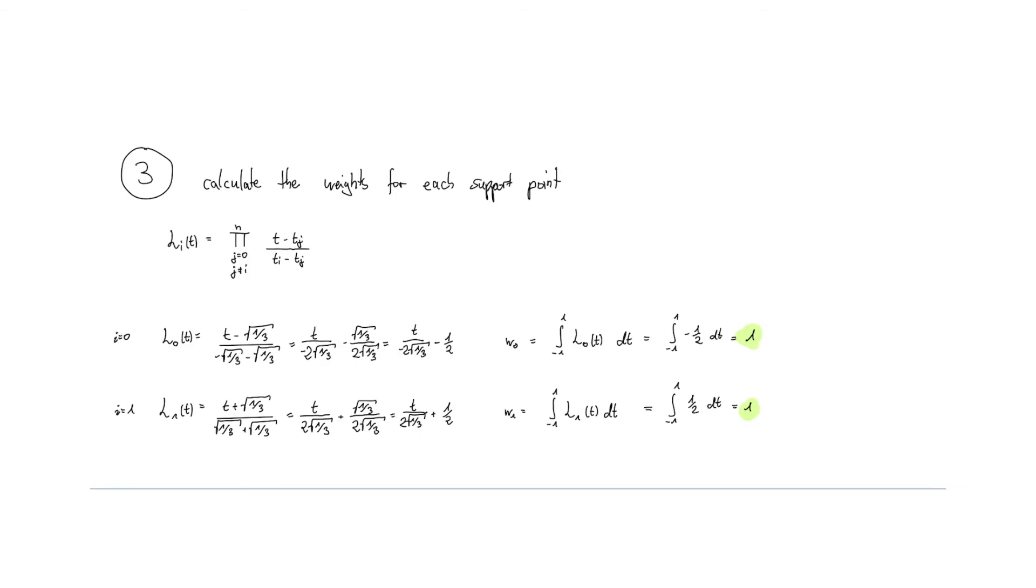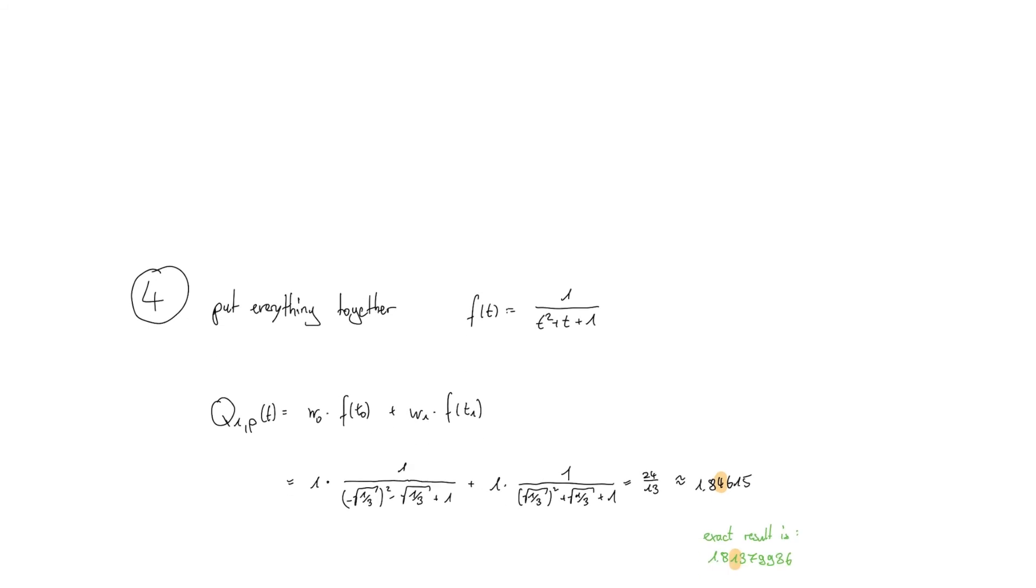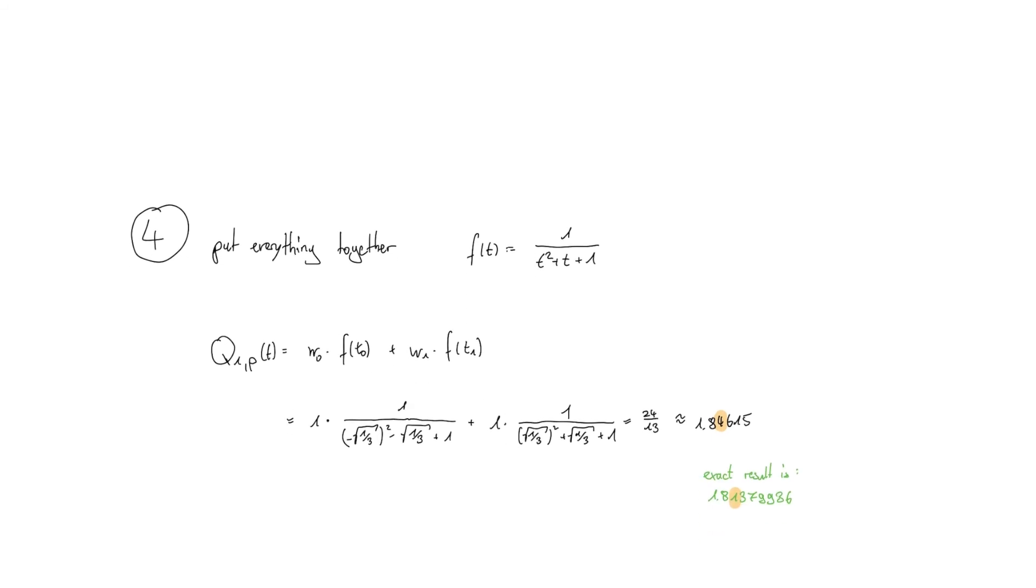Then we can proceed to the last step which is even easier. We just put these things together. We have the weights and we have the support points. We just put the support points into our function so that we get the function values and weigh them according to the weights we calculated in the step before. This leaves us with the result of 1.84615 while the exact result is 1.81379936. Obviously this is not a perfect approximation but it's okay because we just used two support points and we didn't have that much to do.